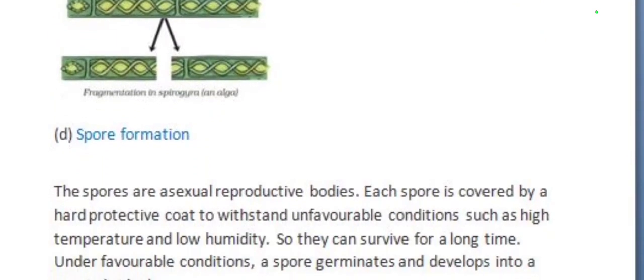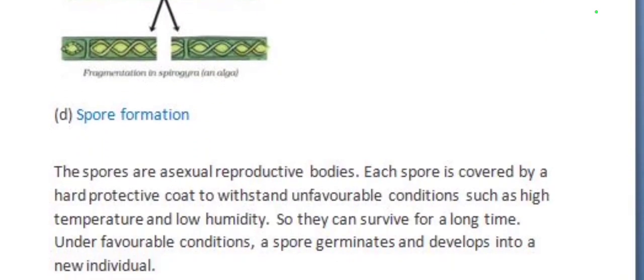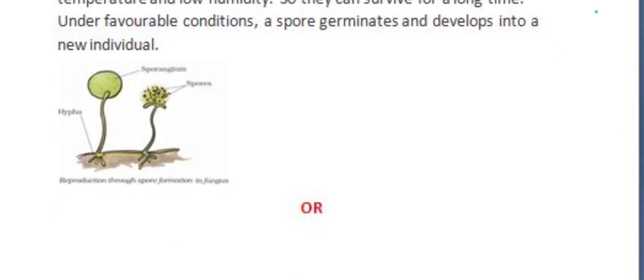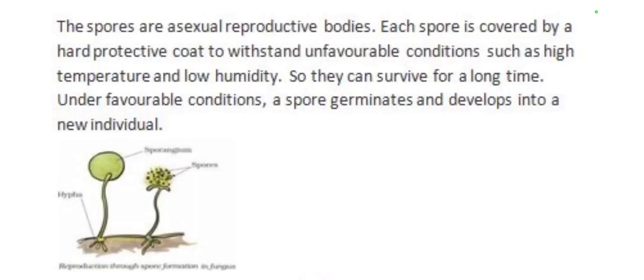The next method is spore formation. Spores are asexual reproductive bodies. Each spore is covered by a hard protective coat to withstand unfavourable conditions such as high temperature and low humidity, so they can survive for a long time. Under favourable conditions, a spore germinates and develops into a new individual. Example: spore formation occurs in fungus.